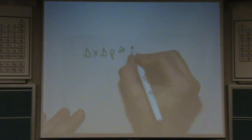Okay, so uncertainty, the Heisenberg Uncertainty Principle looks like this: change in x times change in momentum is greater than or equal to h over 4 pi.